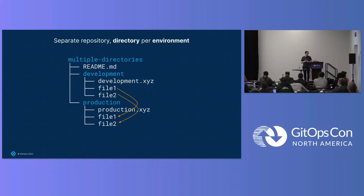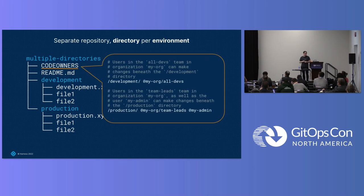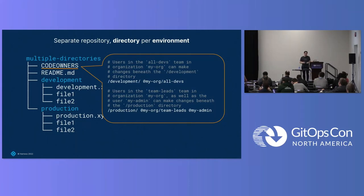Something worth mentioning: if you're concerned about security with this kind of workflow — multiple developers being able to change development and production — there's a feature in GitHub called Code Owners. It's apparently been there for years but I just found out about it last month. With it you can define rules saying specific people or teams need to approve changes to certain files or directories before they can be merged. That's worth looking into from a security standpoint.